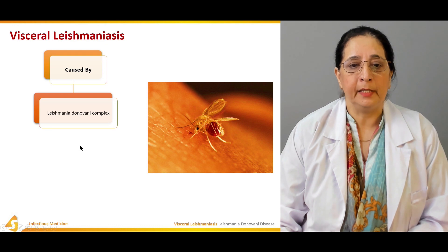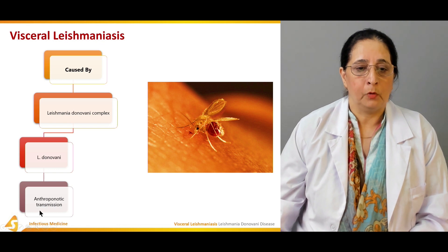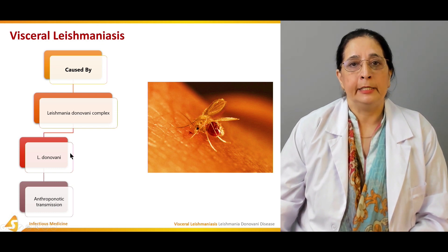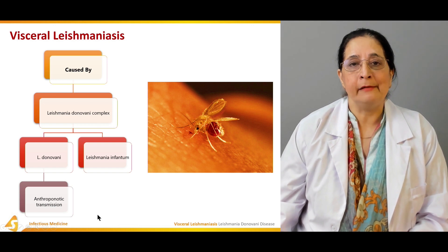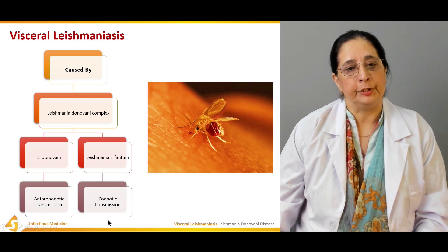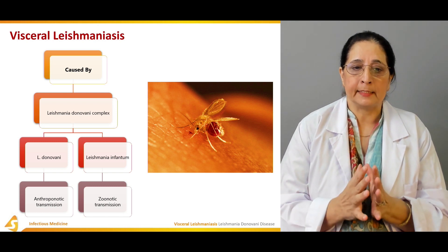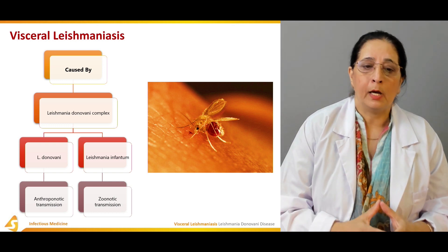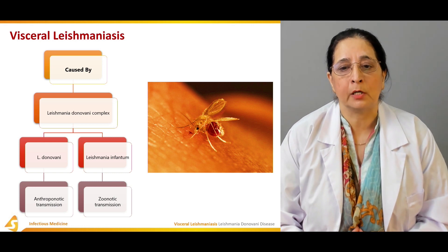Visceral leishmaniasis is caused by the Leishmania donovani complex. Leishmania donovani causes anthroponotic transmission, while Leishmania infantum causes zoonotic transmission. So within the donovani complex, one species is anthroponotic and the other is zoonotic.